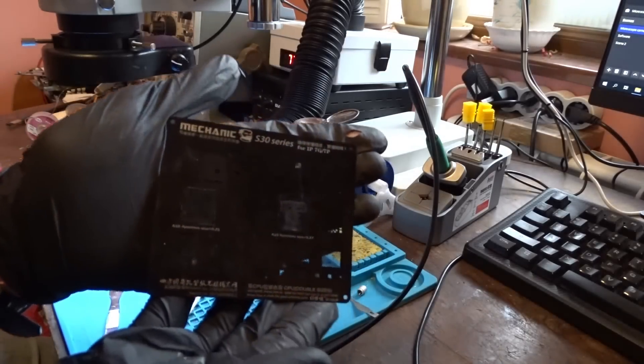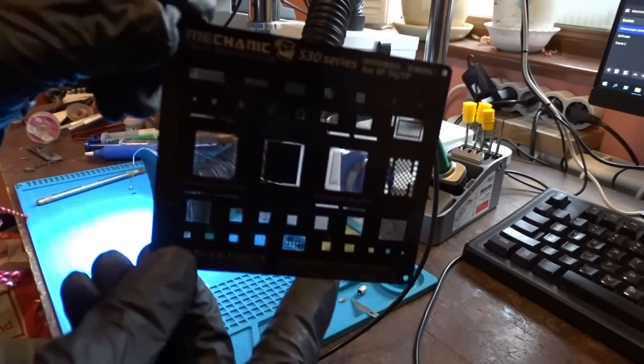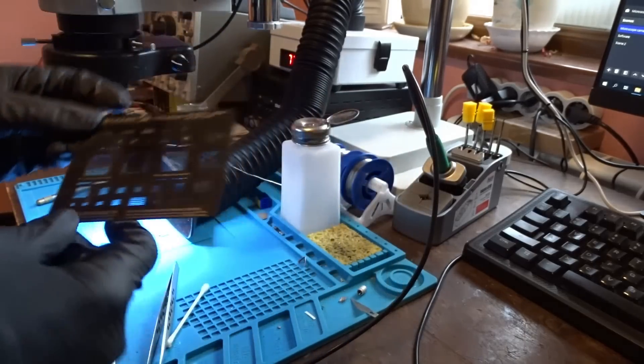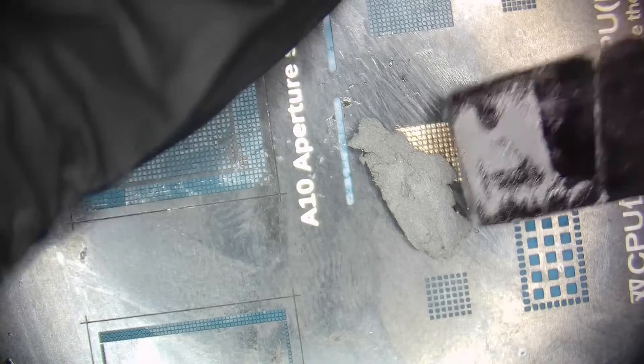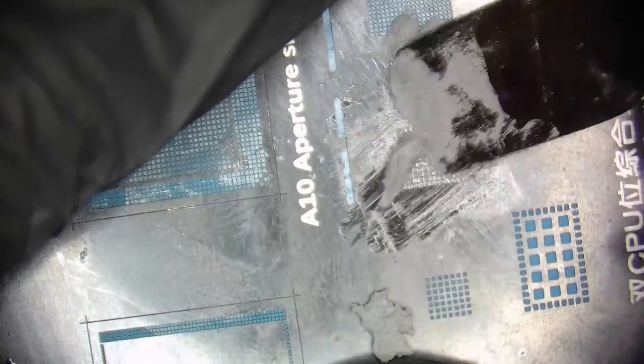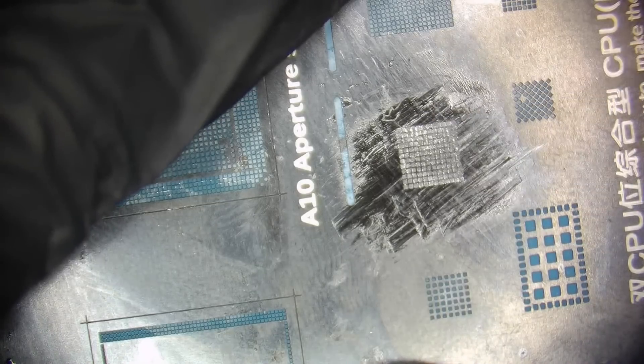Next, we take the correct stencil for the chip we're about to re-ball - in this case, the stencil that contains almost all the chips found in iPhone 7 - and we align the holes with the pads on the chip below. Then we use a metal spatula to push the solder paste into the stencil holes so there are no empty or partially empty holes. While doing so, you need to hold the stencil so it doesn't move, or else you may need to start again.